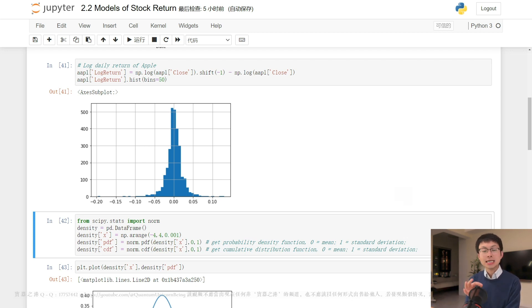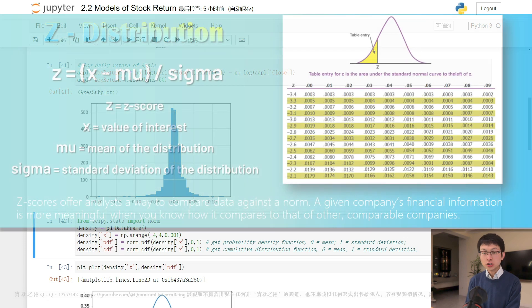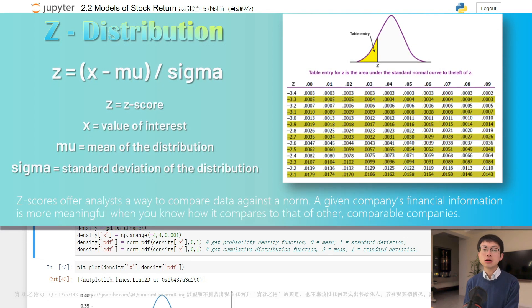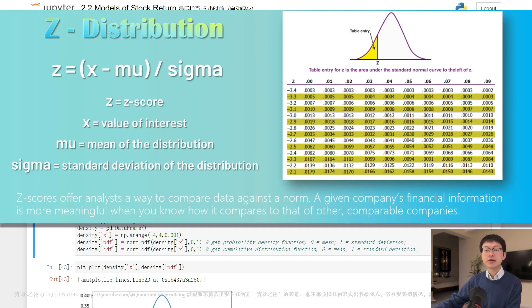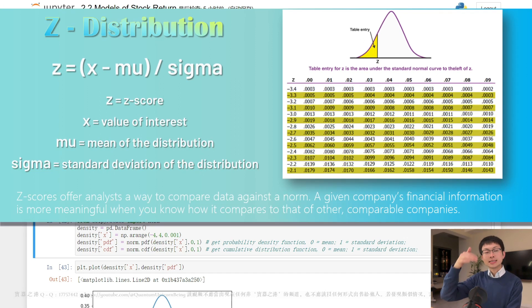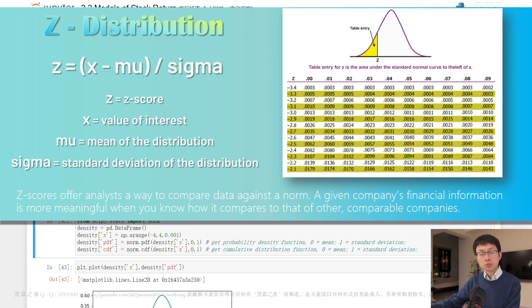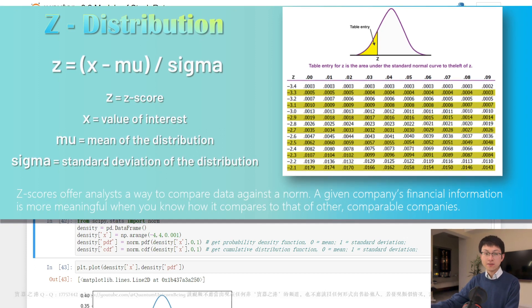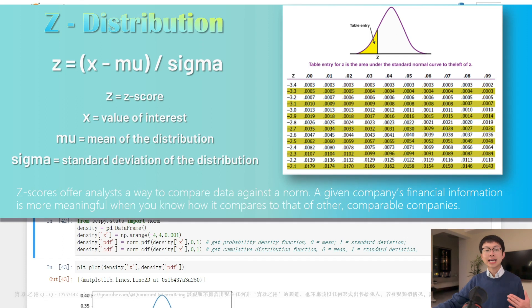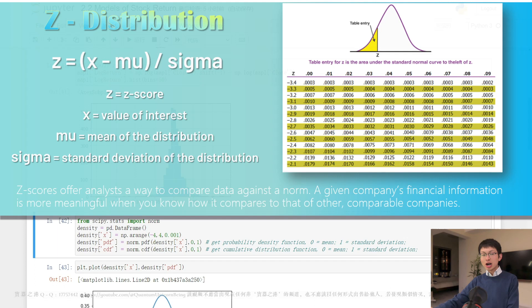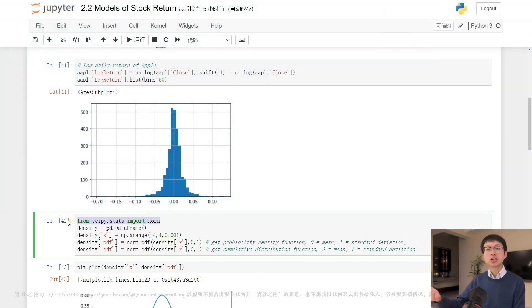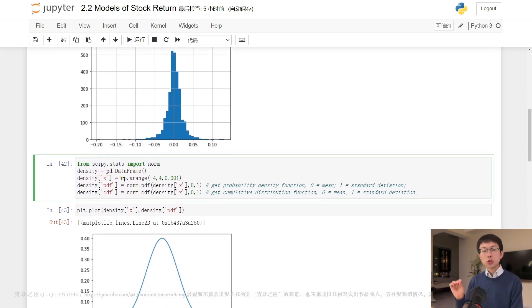Where Z is the Z-score, X is the value of interest, mu is the mean of the distribution, and sigma is the standard deviation of the distribution. Once the Z-score is calculated, the probability of the outcome can be found using a Z-table or a calculator that can perform Z-transformations. With the help of SciPy, a scientific computation package for Python, we can obtain the density function and the cumulative distribution function for the normal distribution.